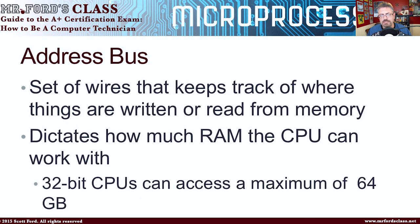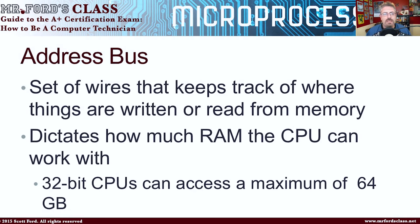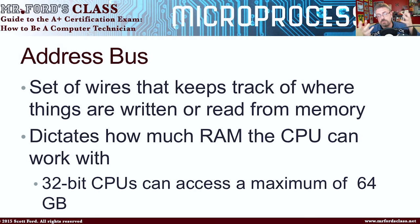The next one I want to talk about is something called an address bus. The address bus is a set of wires that keeps track of where things are written or read from the memory. It's how the CPU keeps track of what it puts in memory — it says file it here, or I need this, where did it get filed, and pulls it back. So the address bus is the bookkeeper, as it were, for the CPU to get into the RAM. It dictates how much RAM the CPU can work with. If the address bus is there keeping track of the memory, then it's the address bus that determines how much memory you can have.